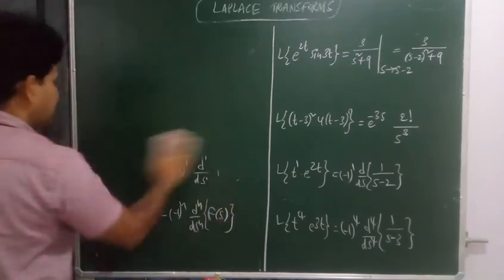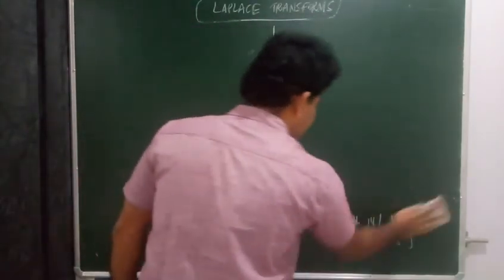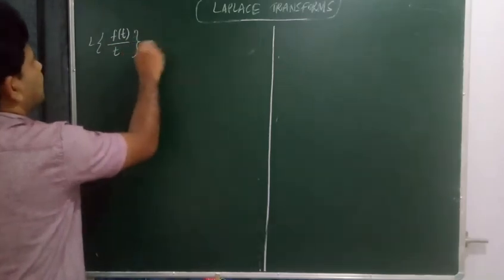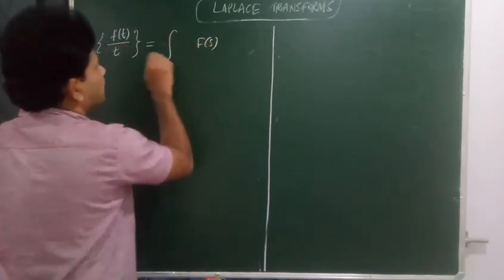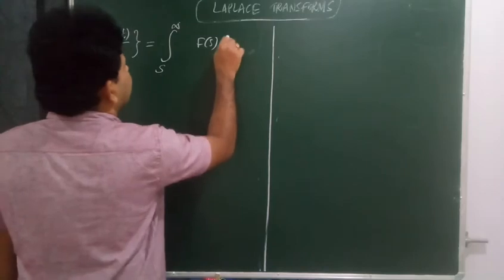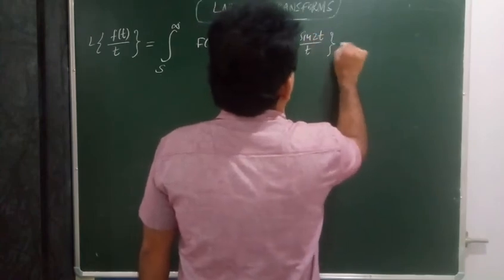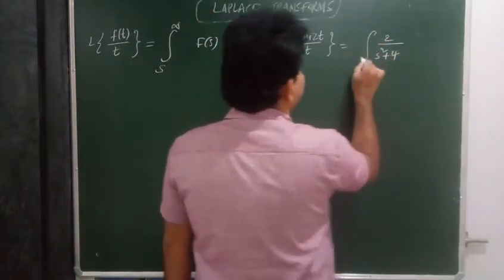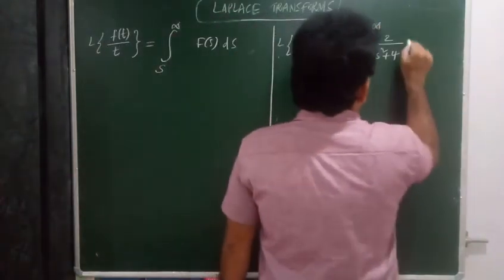Laplace transform of f(t) divided by powers of t: L{f(t)/t} equals the integral from s to infinity of F(s) ds, since division by t corresponds to integration in the s domain. For example, L{sin(2t)/t}: L{sin(2t)} is 2 over s squared plus 4, and since it is divided by t (exponent of t is 1), one folded integral from s to infinity of [2/(s²+4)] ds.